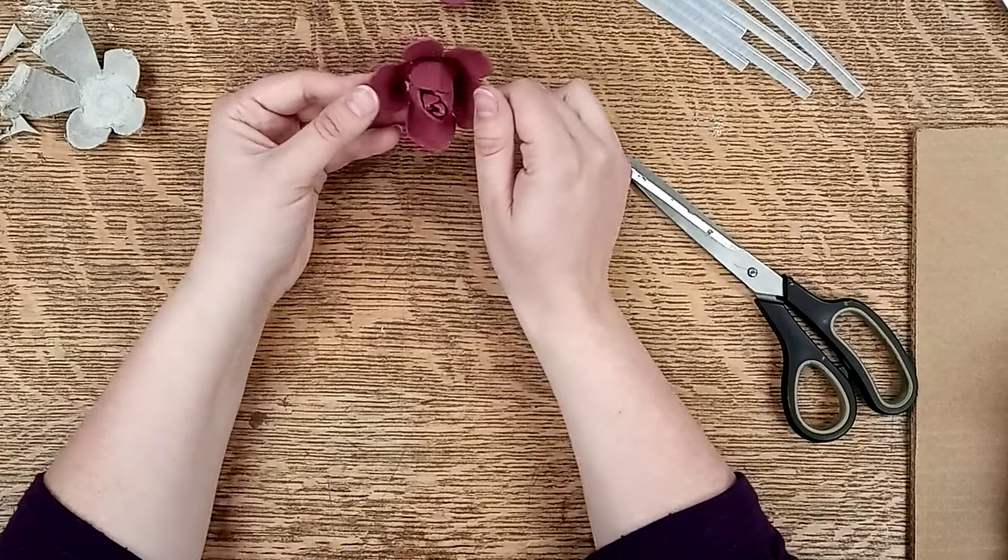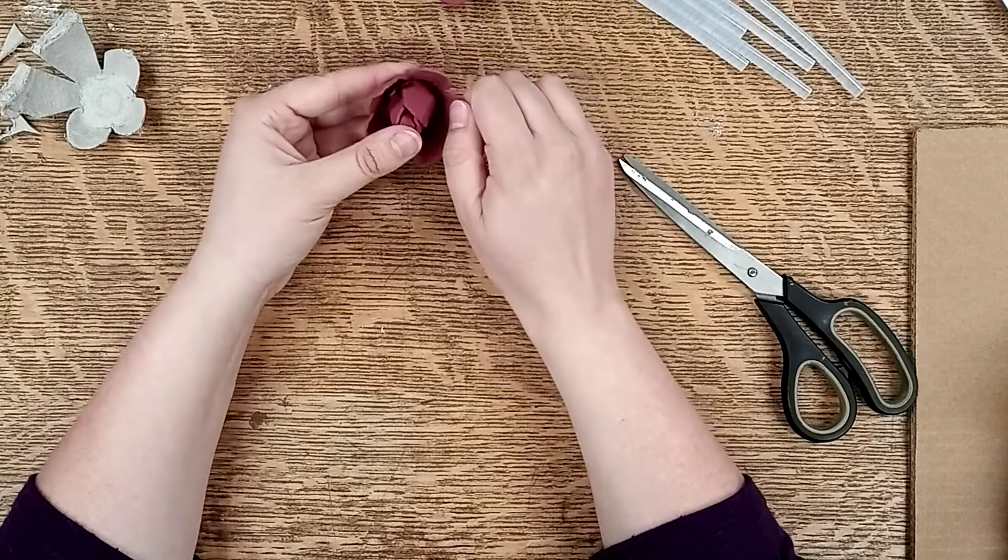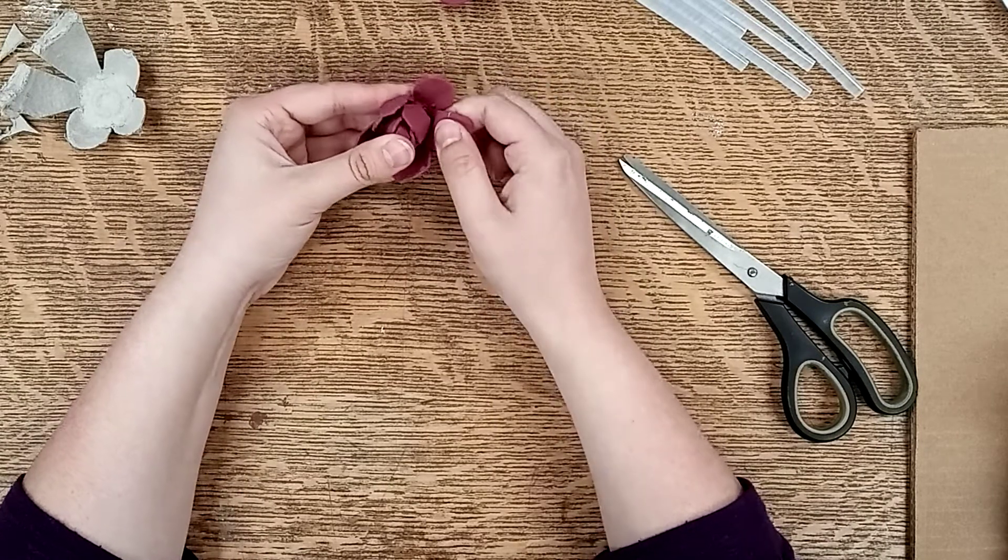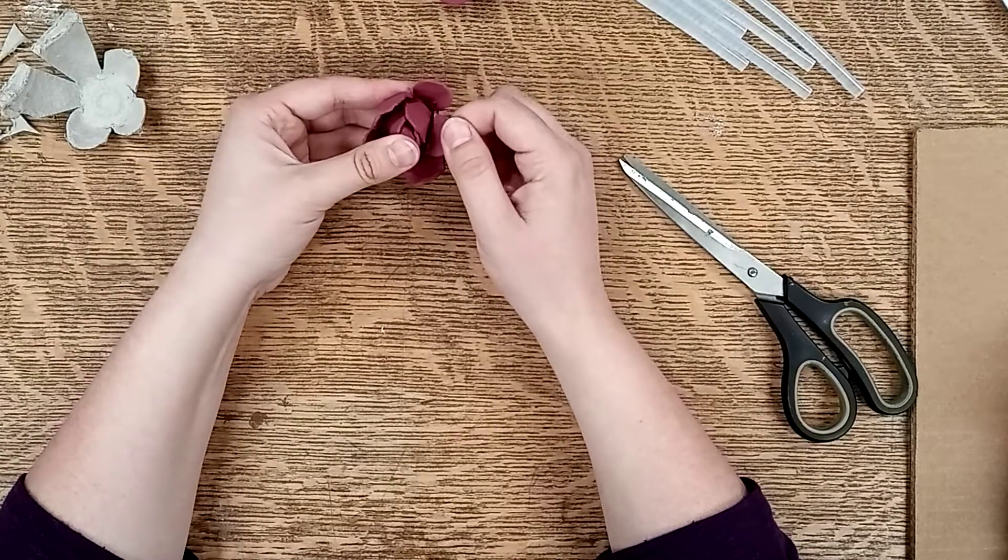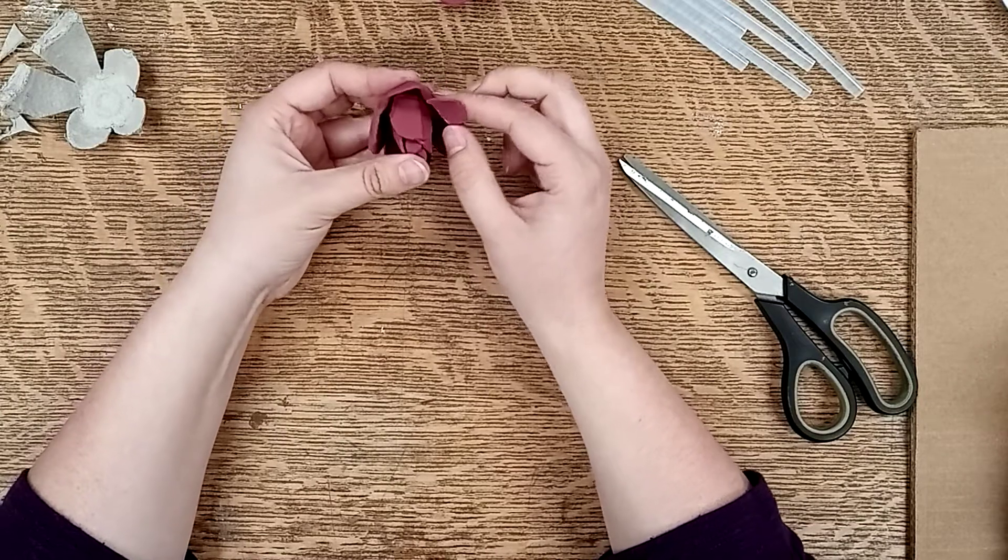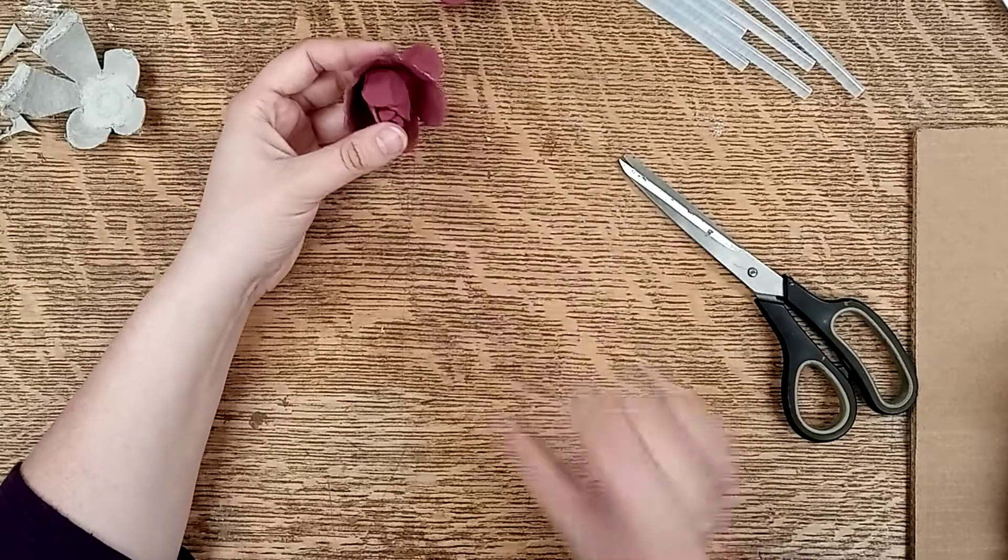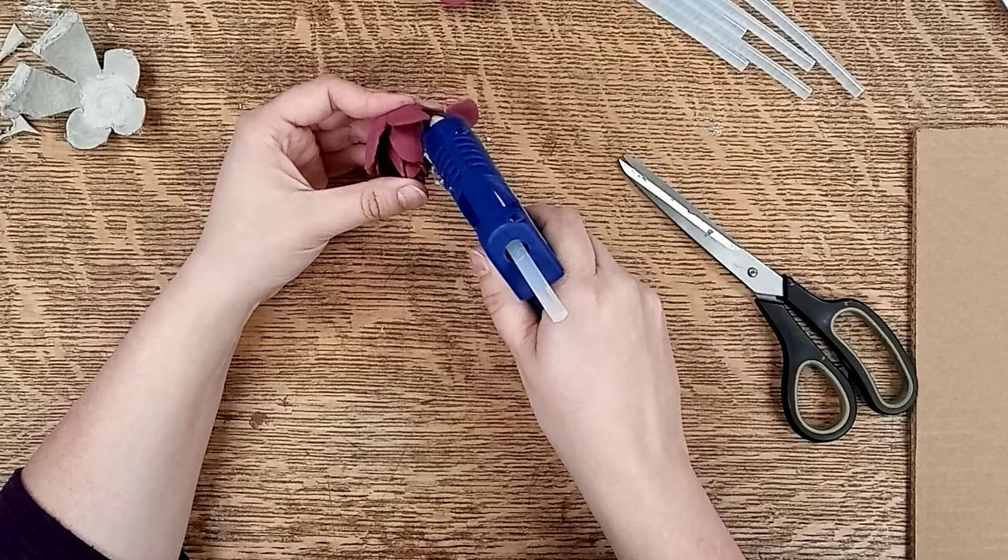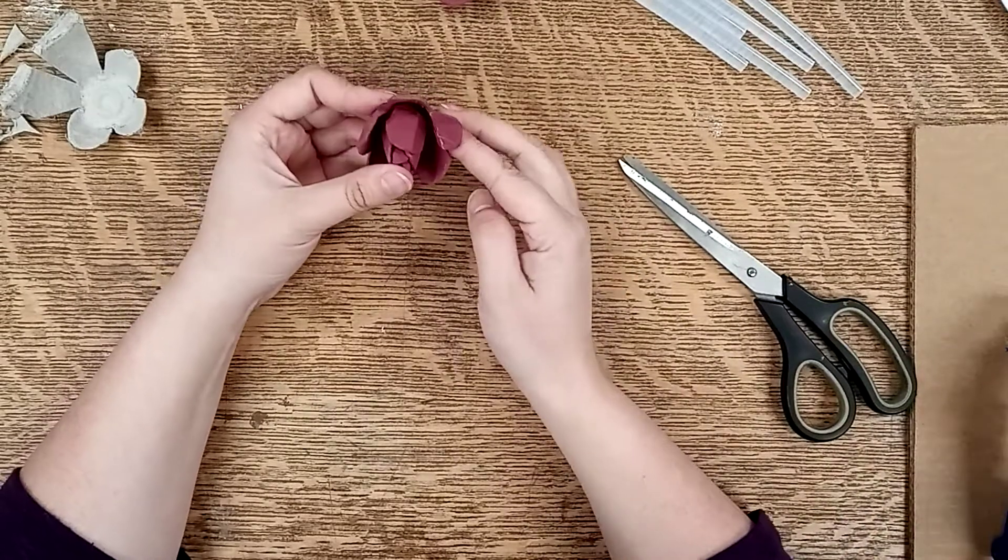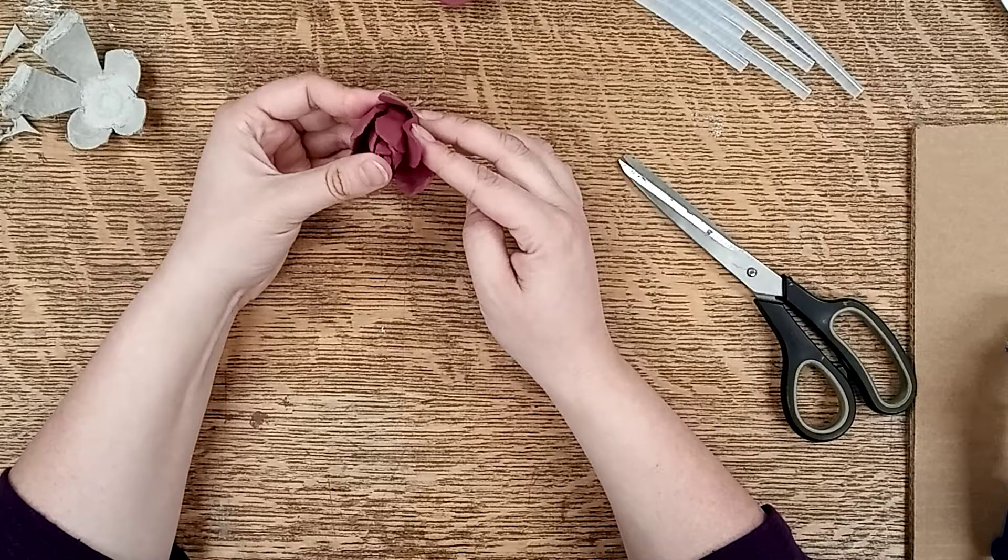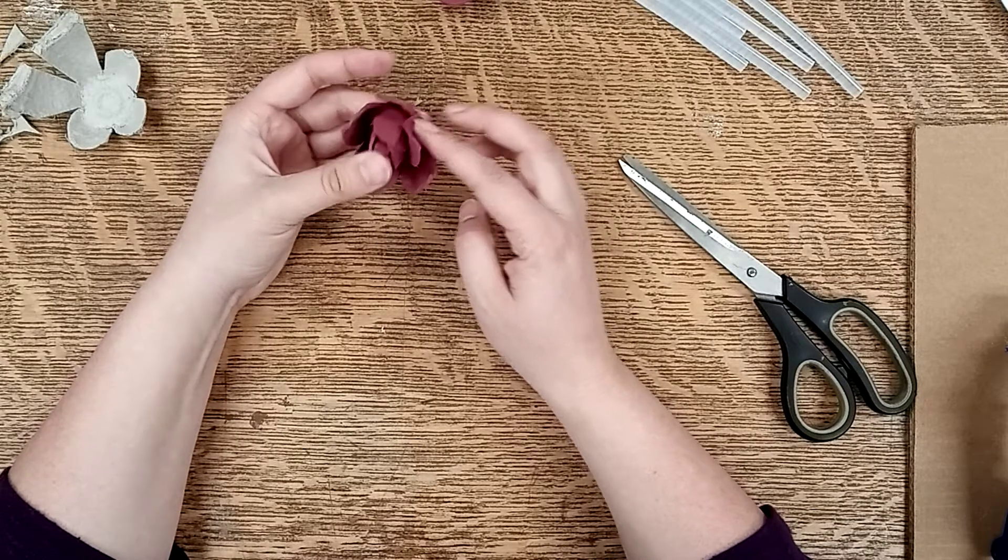And now with all of your petals you want to kind of curl them outwards like so. It's okay if it cracks and you just put a bit of glue there in the middle. And then stick them in place. And you keep going around.